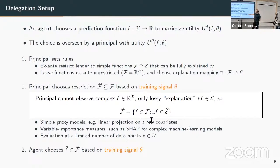I'm still evaluating utility by the final function that gets chosen, not by the explanation itself. The impact of the explanation on utilities is indirect—through which restrictions it places on those functions.